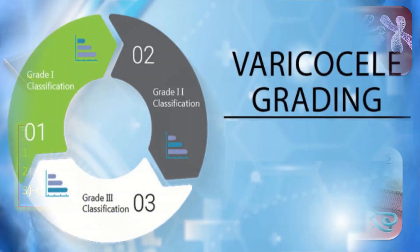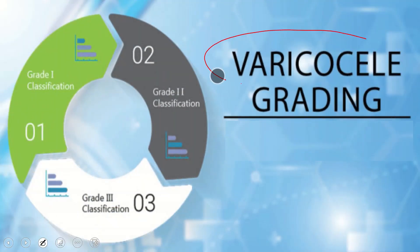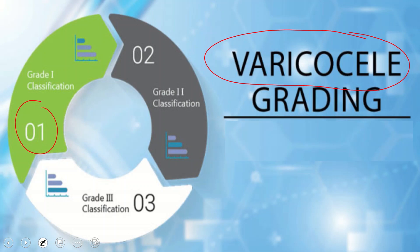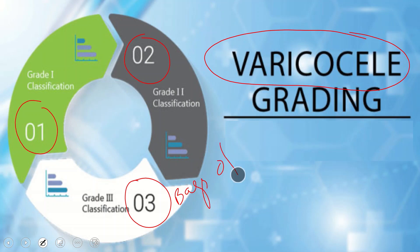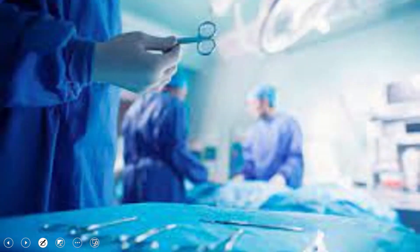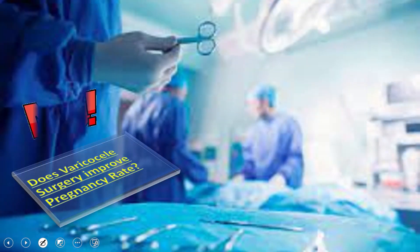Varicocele is basically the enlargement of the veins that transport oxygen-depleted blood away from the testicle. When subclinical, it is not palpable. In grade 1, it is palpable only during Valsalva maneuver. In grade 2, it is palpated without Valsalva. In grade 3, there are visible veins through the scrotal skin, classically described as feeling like a bag of worms. Does varicocele surgery improve pregnancy rate? The answer is no — it does not improve pregnancy rate, but it can correct testosterone concentration.